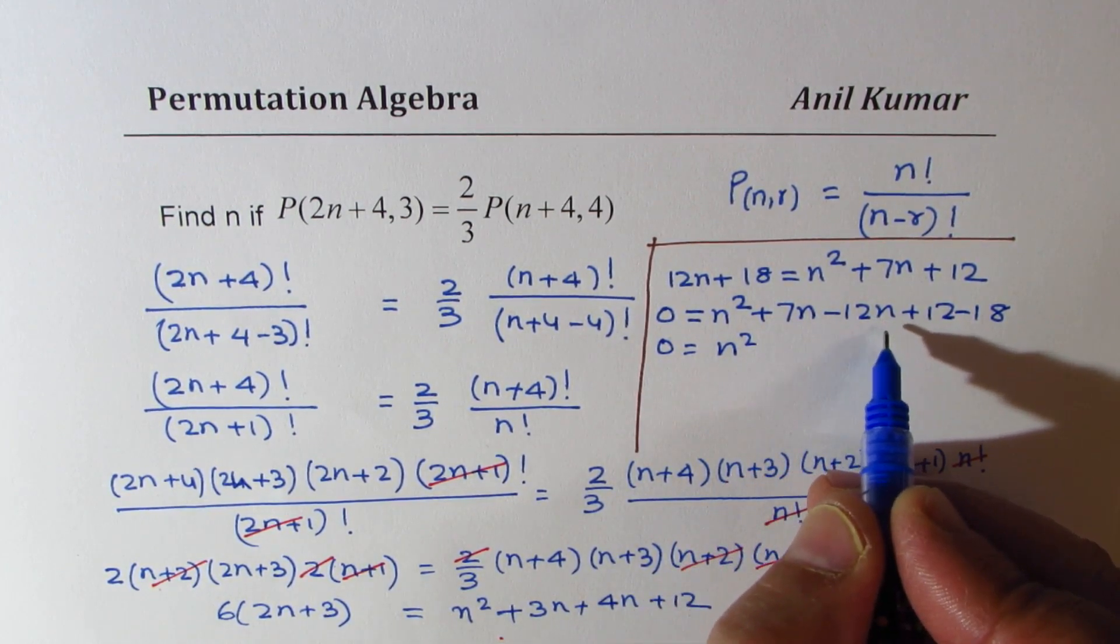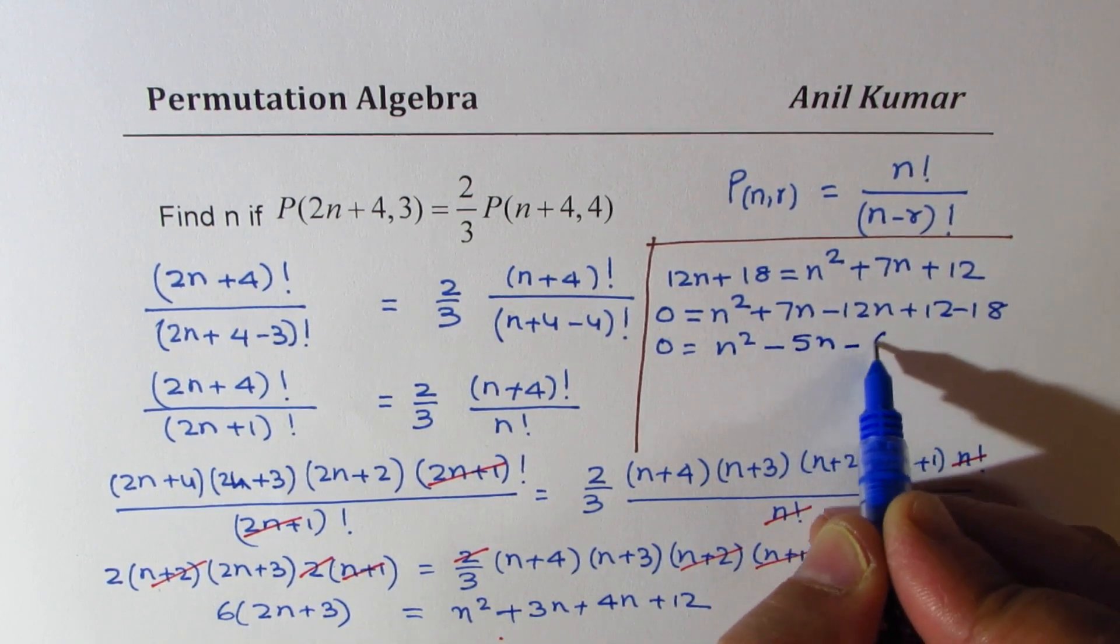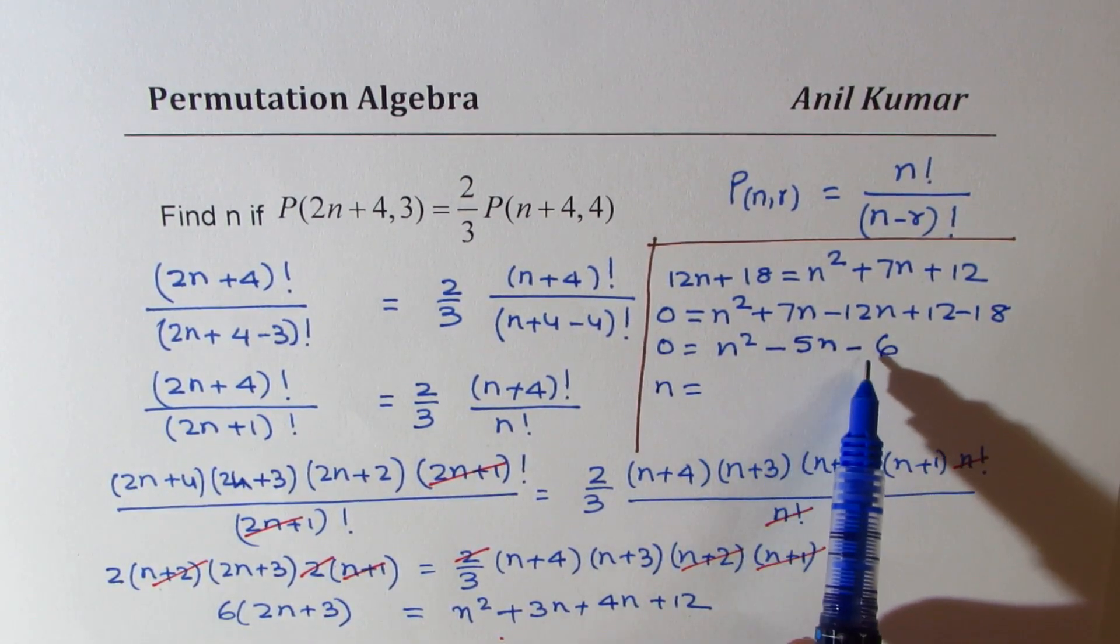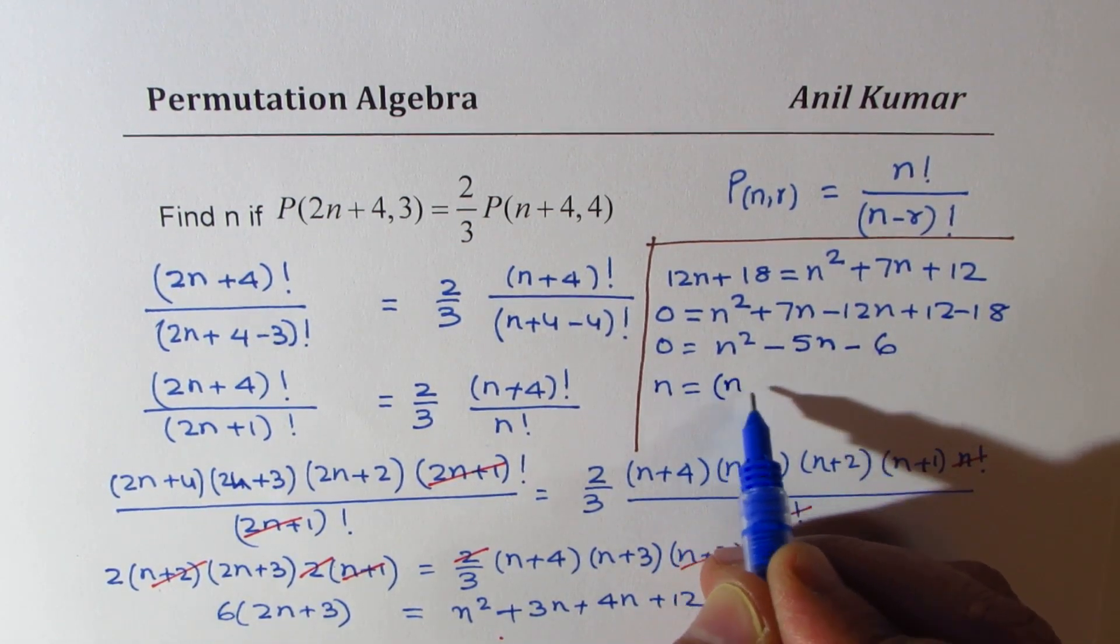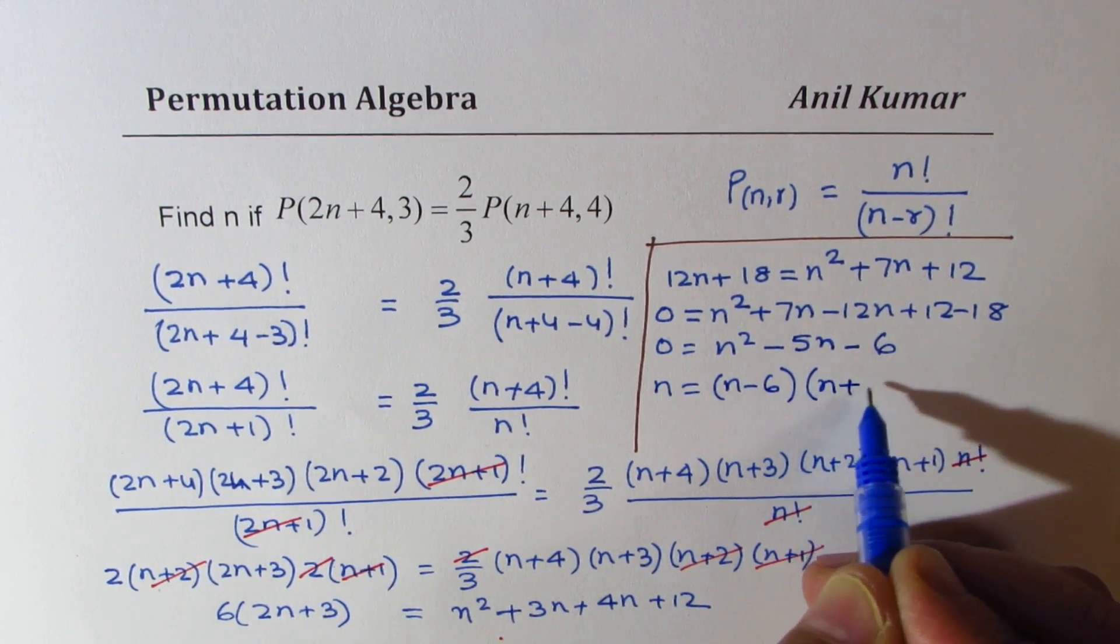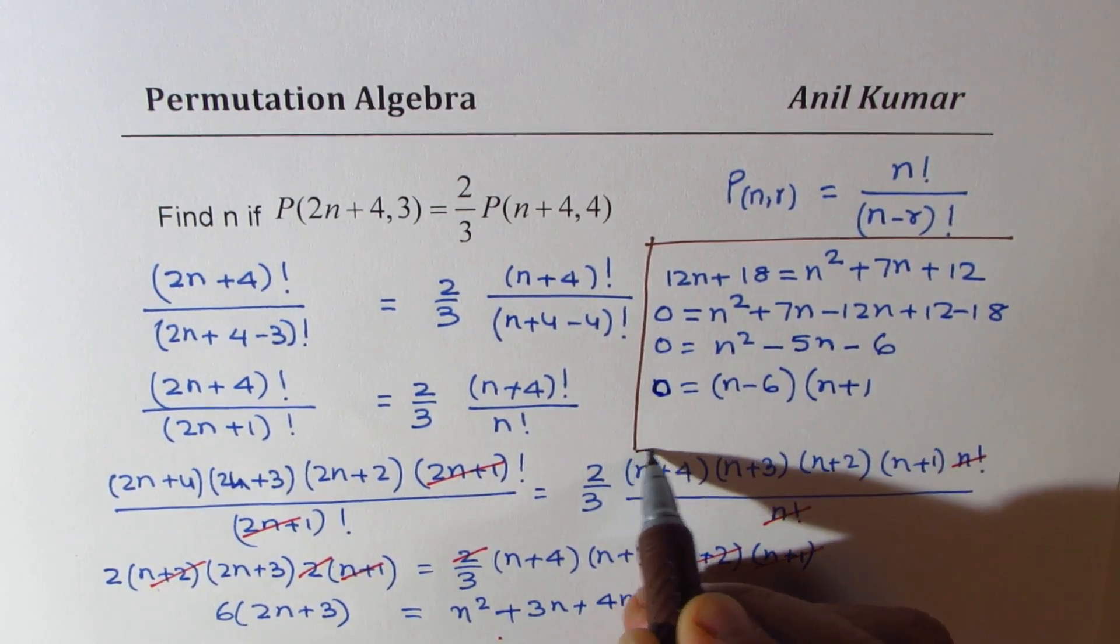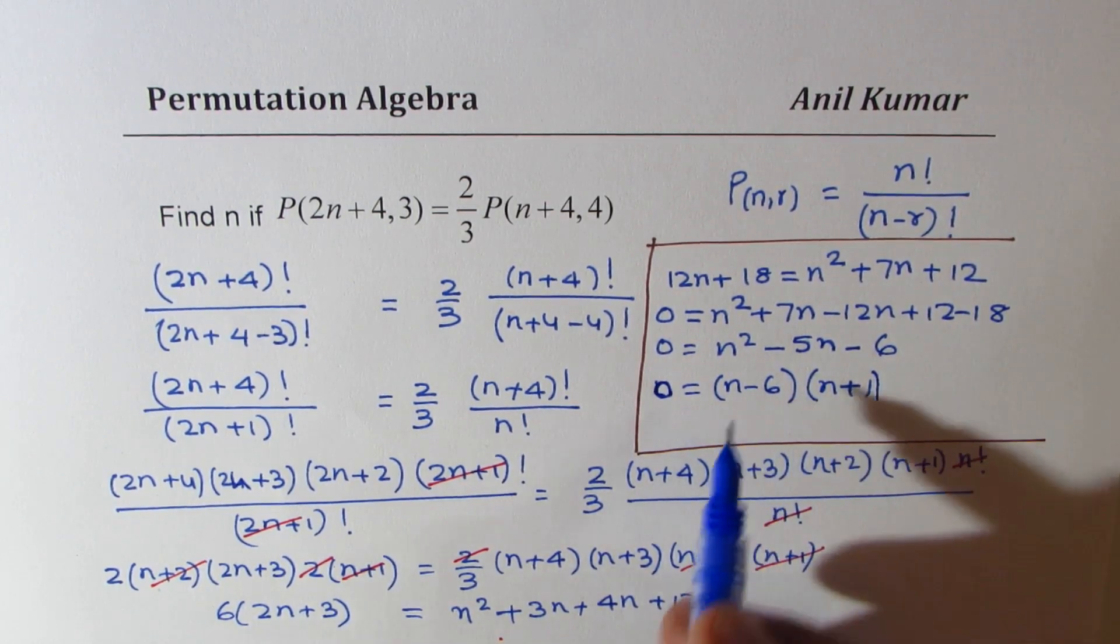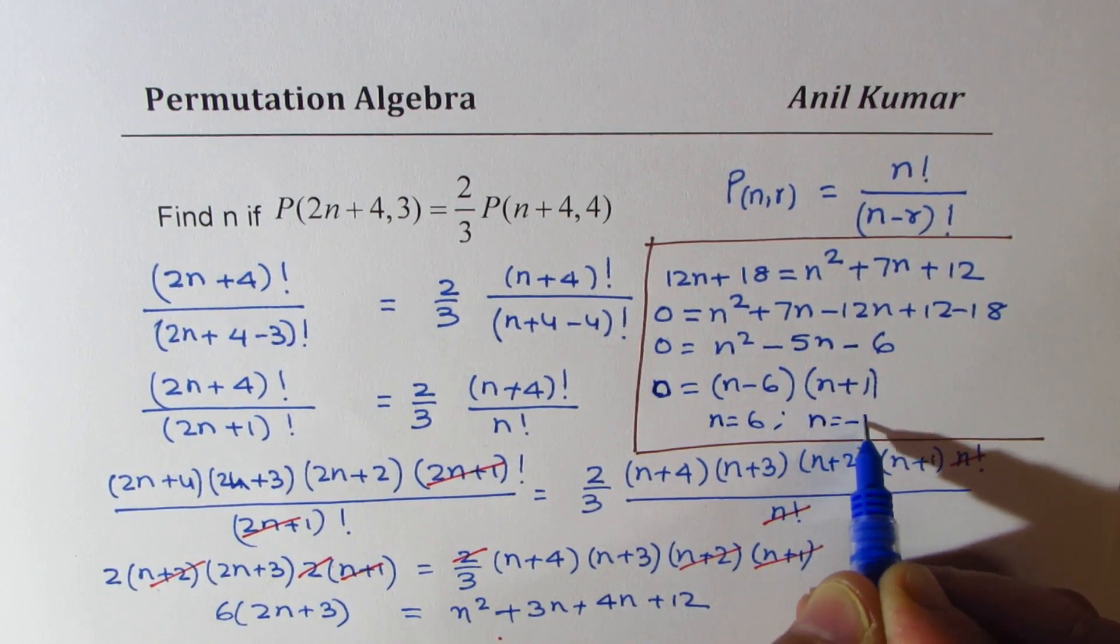So this can be factored. We are looking for product of minus 6, sum of minus 5, so the two terms are minus 6 and plus 1. This equals 0. So that gives you the solution. One solution is n equals 6, the other one is n equals minus 1.